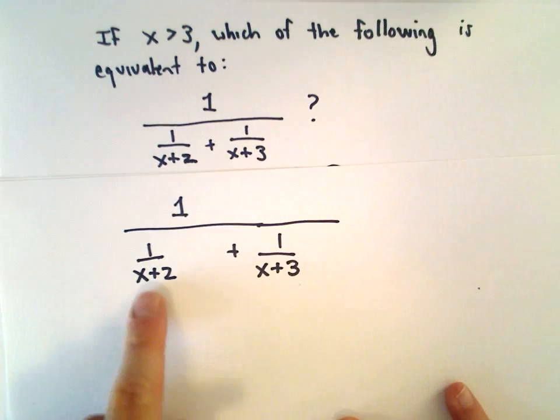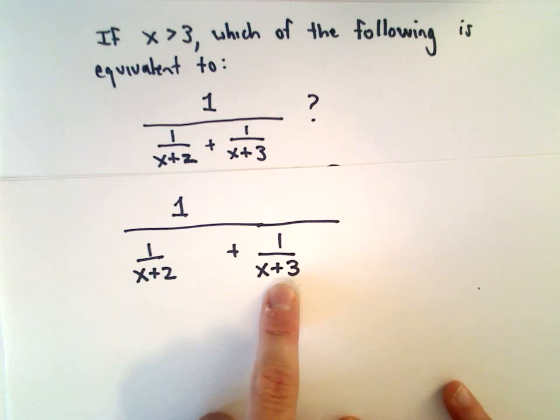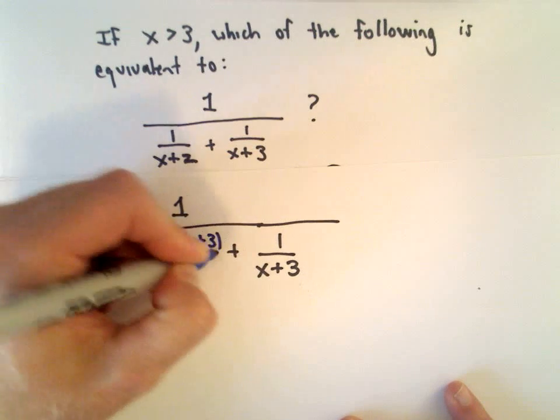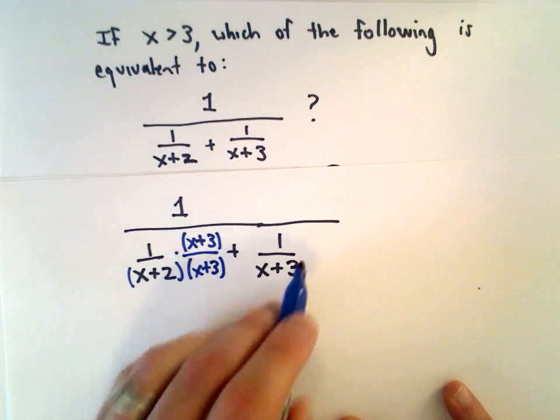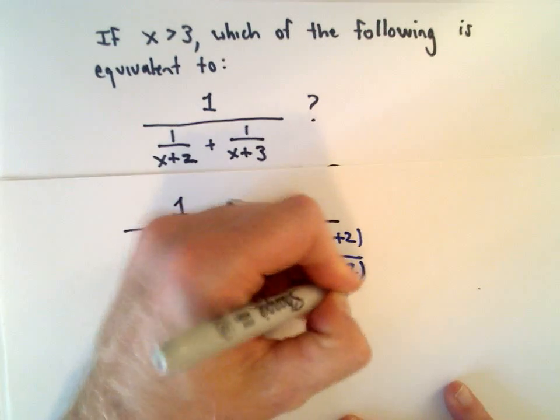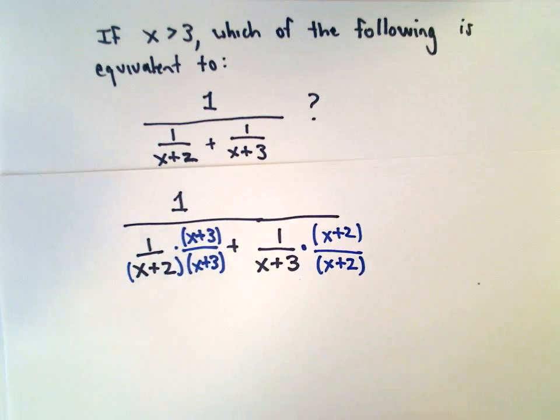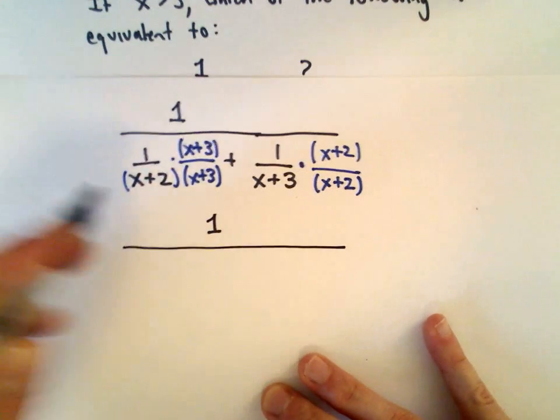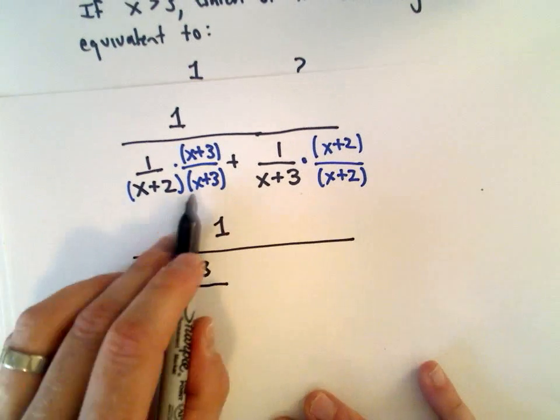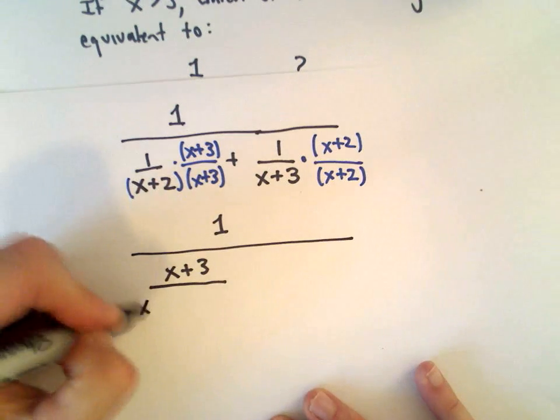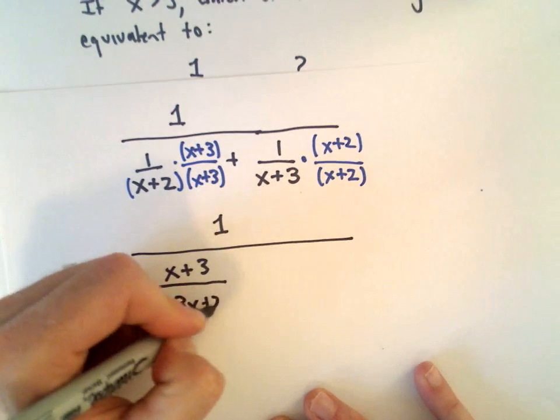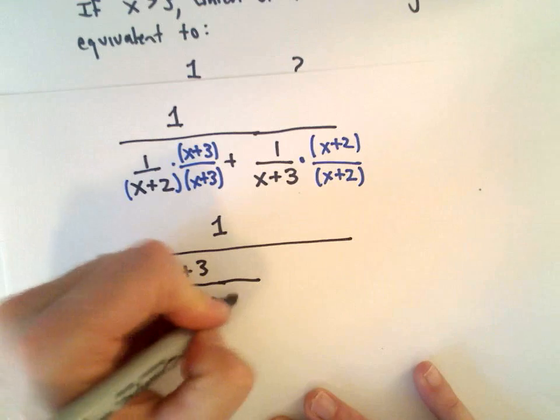This one has a denominator of x+2, and this one has x+3. I need to multiply top and bottom of the first fraction by x+3, and multiply top and bottom of the second fraction by x+2. The 1 on top is still just there. In the denominator, the first fraction gets x+3 in the numerator. If we FOIL it out: x times x is x², x times 3 is 3x, 2 times x is 2x, and 2 times 3 is 6.